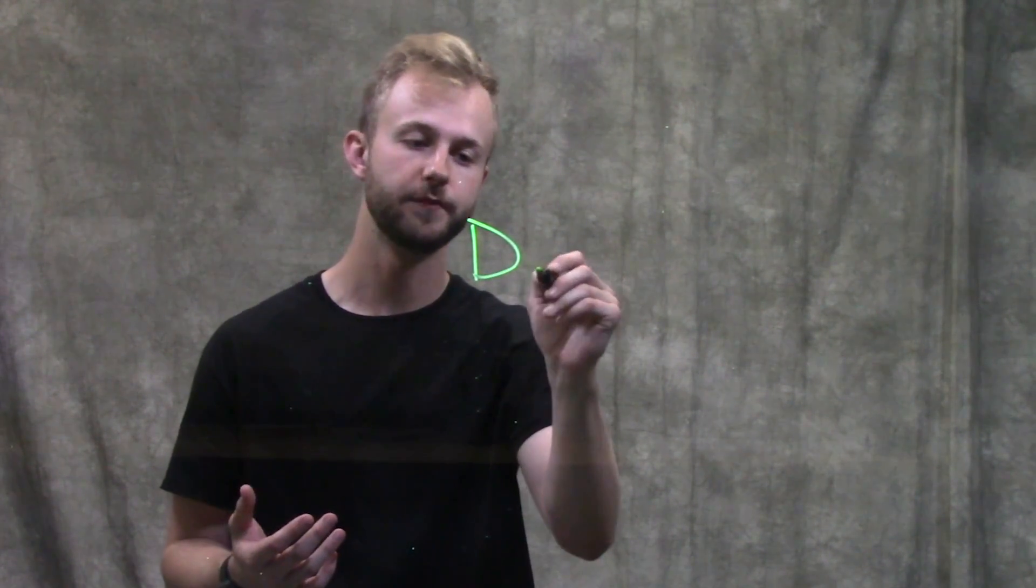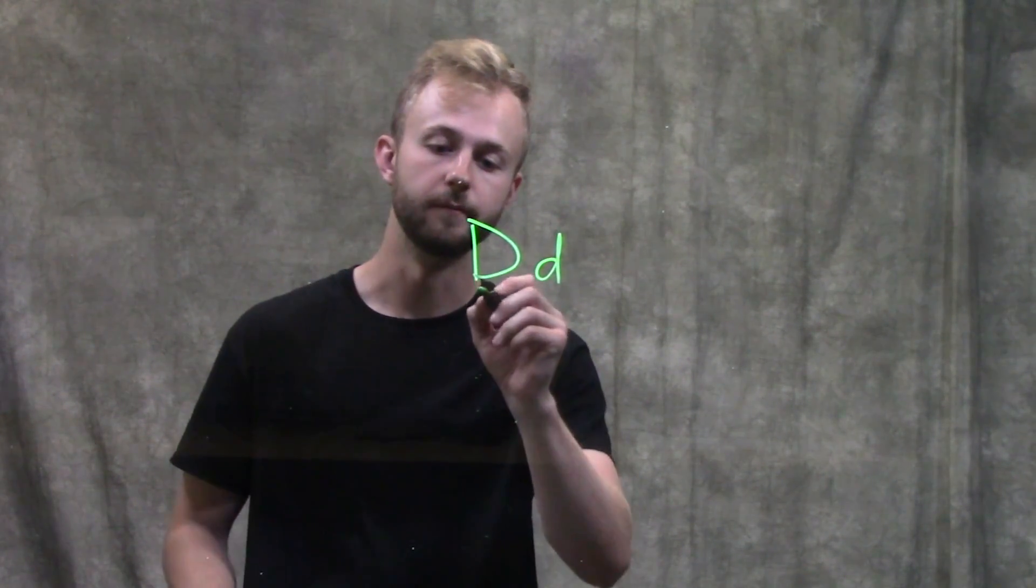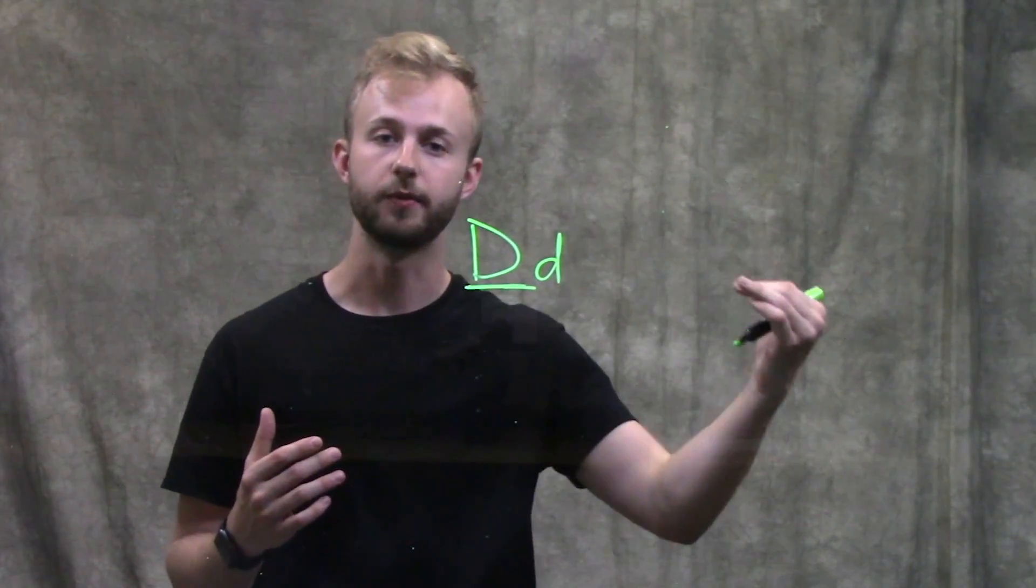For example, if we have a dominant allele represented by a capital letter and a recessive allele represented by a lowercase letter, the dominant one is the one that's actually showing up in the phenotype.